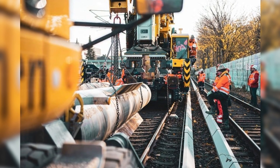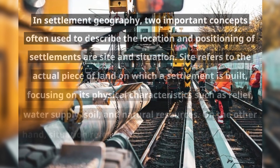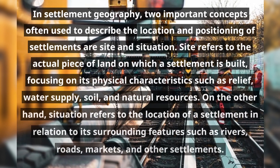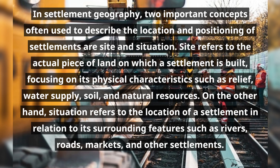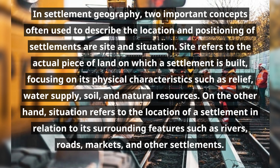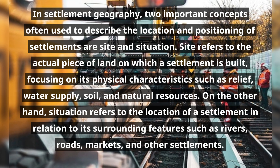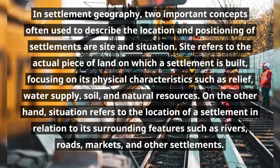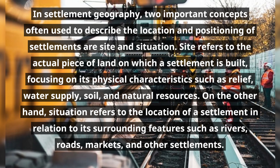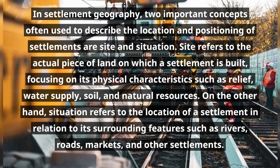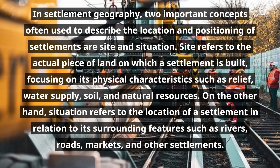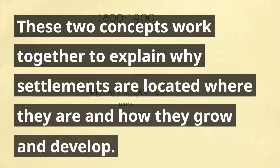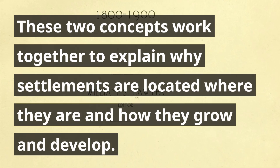In settlement geography, two important concepts often used to describe the location and positioning of settlements are site and situation. Site refers to the actual piece of land on which a settlement is built, focusing on its physical characteristics such as relief, water supply, soil, and natural resources. Situation refers to the location of a settlement in relation to its surrounding features such as rivers, roads, markets, and other settlements. These two concepts work together to explain why settlements are located where they are and how they grow and develop.